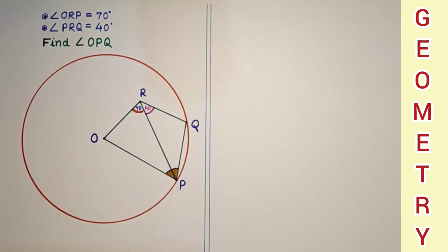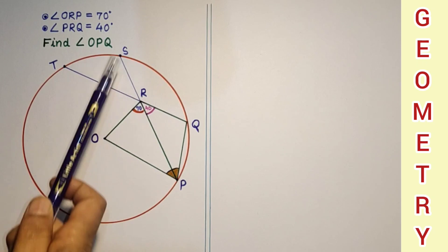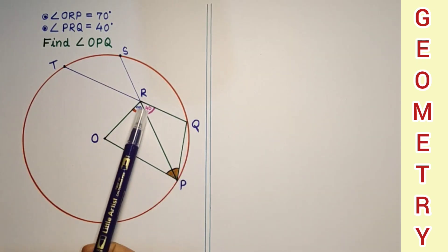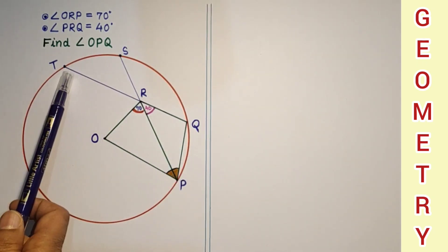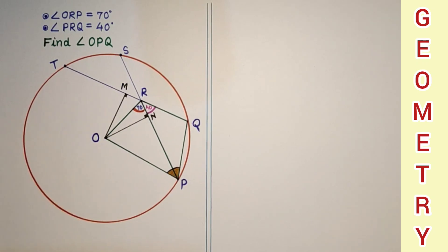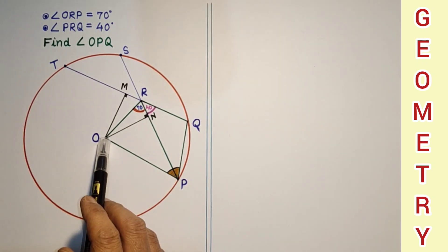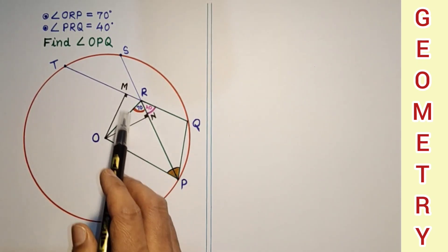To solve this, if we extend PR and QR, we will get two chords of the circle. Here I have extended this PR up to S, so PS is a chord, and QR up to T where QT is another chord. Now from the center O, if we draw perpendicular, so OM is perpendicular drawn to this chord, and from this center ON is perpendicular drawn to this chord.